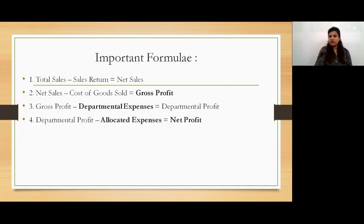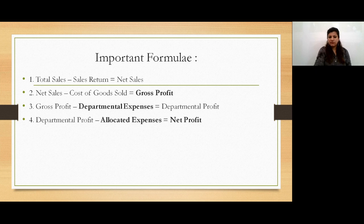Let's discuss some important formulas. We get gross profit by deducting cost of goods sold from net sales. We get departmental profit by deducting departmental expenses from gross profit. And we get net profit by deducting allocated expenses from departmental profit. Note that we are talking about indirect or unallocated expenses — when we divide unallocated expenses to different departments, these become allocated expenses.